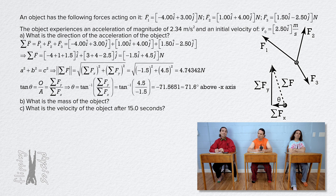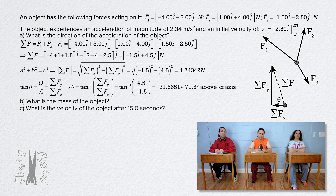That gives negative 71.5651, or 71.6 degrees above the negative x-axis. What does the negative in front of the angle mean? That just means the angle is clockwise. When using your calculator and trig functions, positive angles are counterclockwise and negative angles are clockwise. Right, I forgot about that. Thanks. You are welcome.